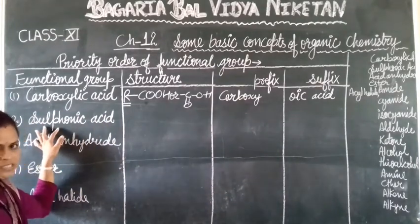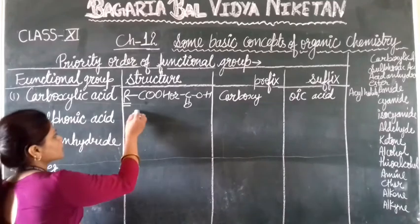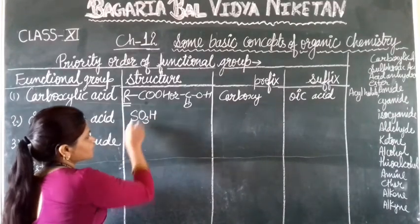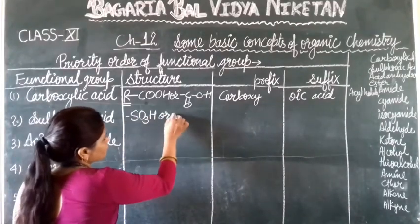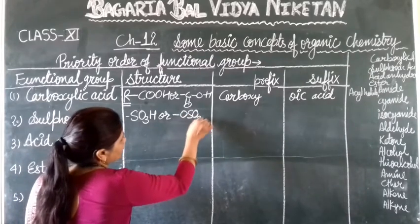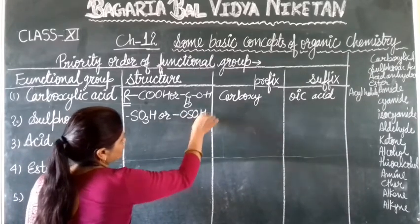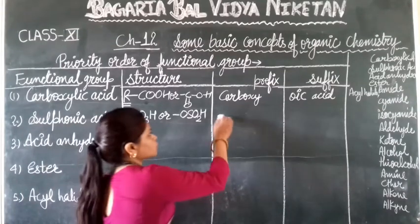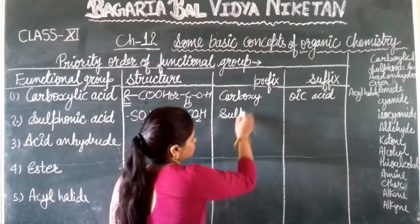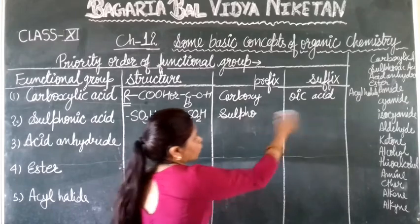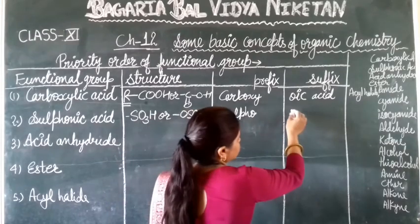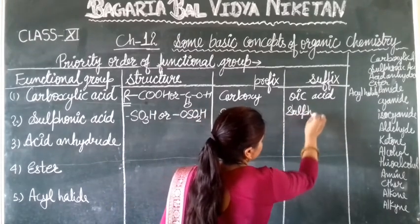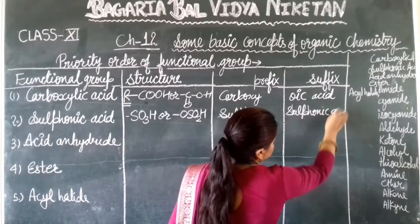Next we will talk about sulfonic acid. Sulfonic acid is SO₃H. It can be written in various structural ways, and its suffix is 'sulfonic acid'.